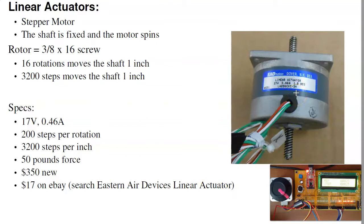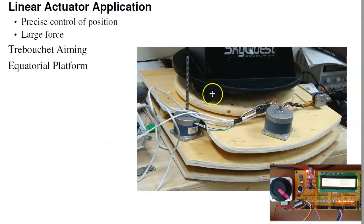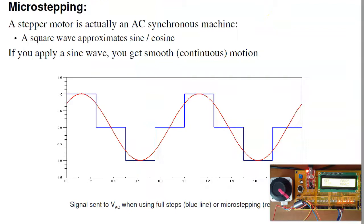It also has quite a bit of force. This can produce up to 50 pounds of force. They sell for $350 new, $17 on eBay when you can get them. Just search for eastern air devices linear actuators, and occasionally they appear on eBay. There's also bigger ones that are 350 pounds force, $700 new. We bought them on eBay for about 20 bucks. What they've been used for in the past, one of our students built a trebuchet, a siege engine from France back in the Middle Ages. The linear actuators control the angle of the trebuchet so you can try to hit your target. This is another use: an equatorial platform. It tilts the telescope left, right, forward, back, and rotates it so the telescope will follow the stars.